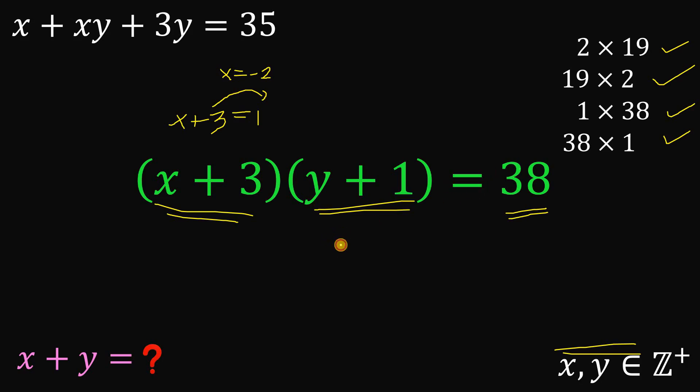Also, if y plus 1 is 1, so y plus 1 is 1, and we solve for the value of y, we get that y equals 0, which is also not possible because, again, x and y are both positive integers.